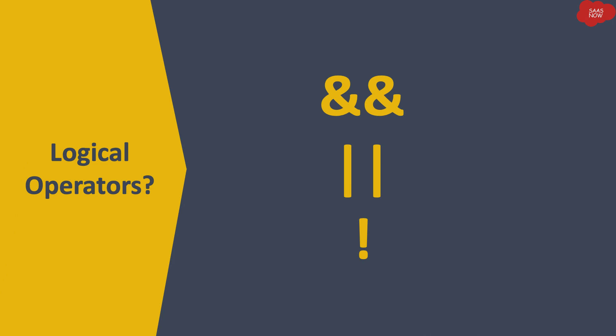The next type of operator is the logical operator, which is used to show AND, OR, and NOT for comparison. Double ampersand (&&) is called logical AND — used to include two comparisons together. Double pipe (||) is called logical OR — used when at least one of the comparisons needs to be true. Exclamation (!) is called logical NOT — used to exclude a comparison. These are the ones you will use most in ServiceNow scripting.